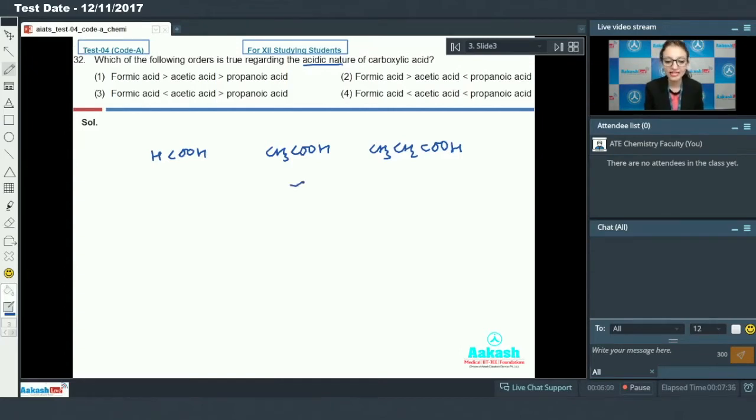If you look at ethanoic acid and propanoic acid, CH3 and ethyl are attached to carboxylic acid group. Aur yeh jo hote hain electron releasing group hote hain. Electron releasing group decreases the acidic strength. So the order of acidic nature will be formic acid ka sab se zyada, then ethanoic acid or acetic acid we can say, and last mein hoga propanoic acid. Kyunki ethyl ka plus effect zyada hota hai. So answer for this question is option one.